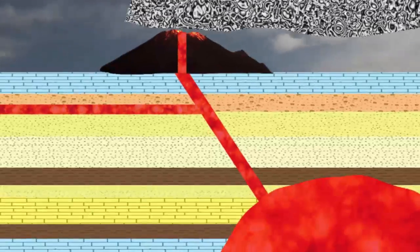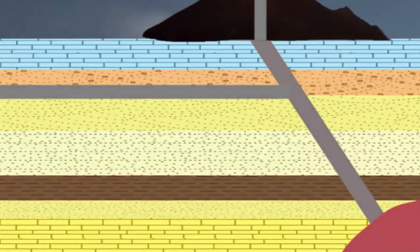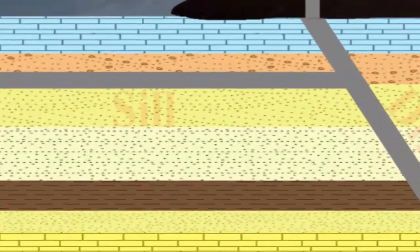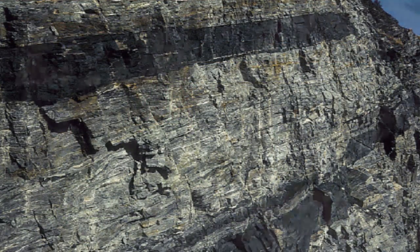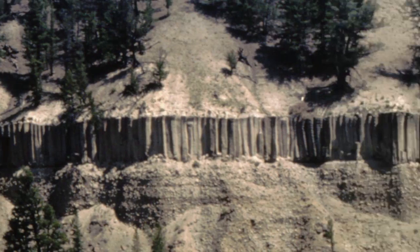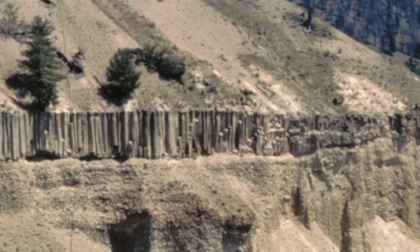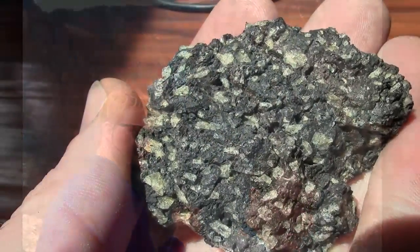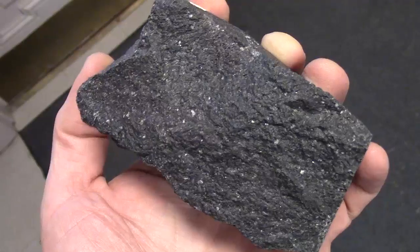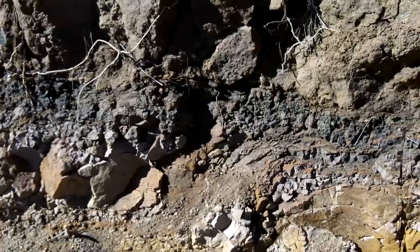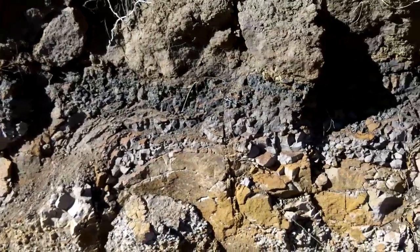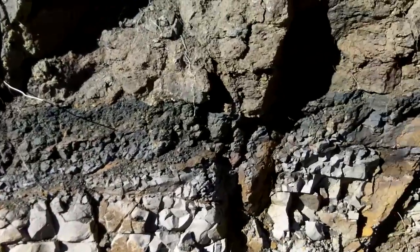Conversely, if the igneous intrusive rock body is tabular and concordant — that is parallel with the country rock layers — we call it a sill. We can almost think of a sill as an underground lava flow running along the bedding planes. Both sills and lava flows are often fed by feeder dikes, but we can tell a sill from a lava flow. One way we distinguish is crystal size, as sills are coarser grained than lava flows. We can also look for something we call a baked zone, where the magma body dumps heat into the surrounding rock and alters the country rock without melting it.